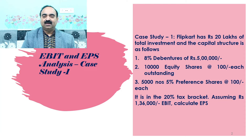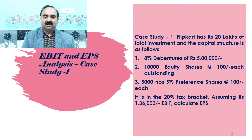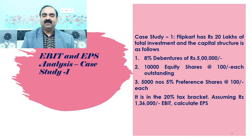Case Study 1. Flipkart has ₹20 lakhs of total investment and the capital structure is as follows: 1. 8% debentures of ₹5 lakhs; 2. 10,000 equity shares at the rate of ₹100 each outstanding; 3. 5,000 numbers 5% preference shares at the rate of ₹100 each. It is in the 20% tax bracket. Assuming ₹1,36,000 earning before interest and tax, shortly known as EBIT, calculate earning per share, shortly known as EPS.